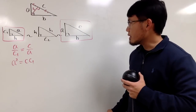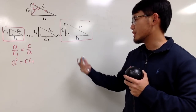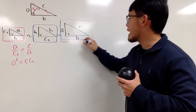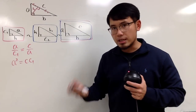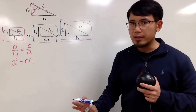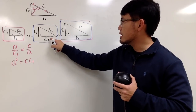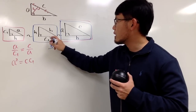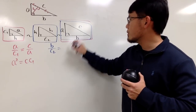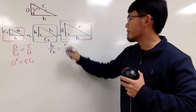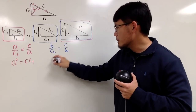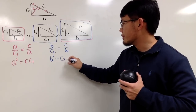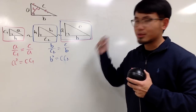Now for the second and the biggest triangle, I want to set up a proportion but I don't want h at all. So I'll have b over c2, and that should be equal to c over b. Cross-multiplying, we get b squared equals c times c2.